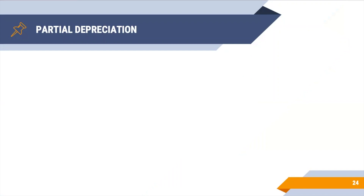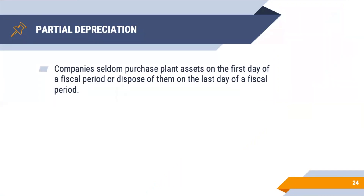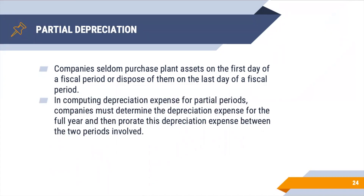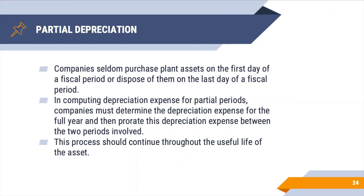What about partial depreciation? Companies seldom purchase plant assets on the first day of a fiscal period or dispose of them on the last day. It is more realistic to buy or dispose of an asset in the middle of the year. In computing depreciation for partial periods, determine the depreciation expense for the full year and then prorate it between the two periods. For example, if purchased in June, from June to December is 7 months — multiply the annual depreciation by 7/12. For the second year, the remaining 5/12 from the prior year plus 7/12 of the new year's depreciation. This process continues throughout the useful life of the asset.